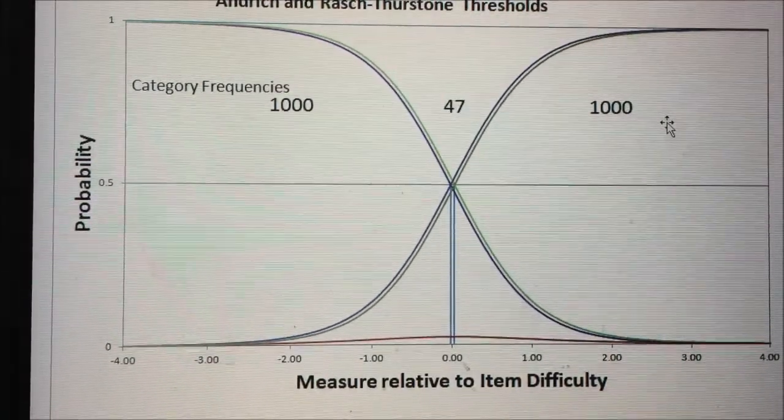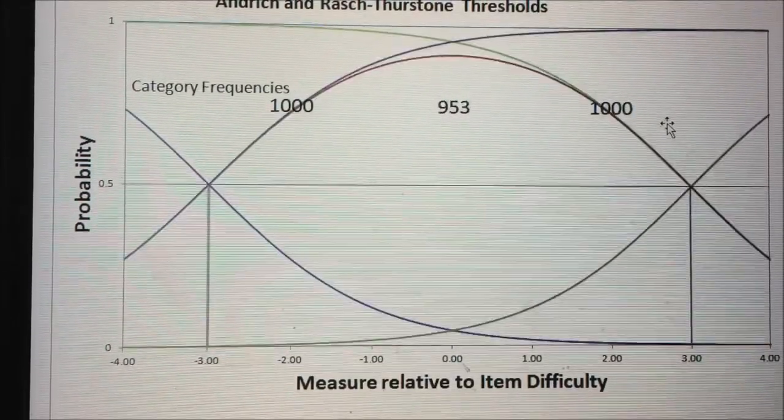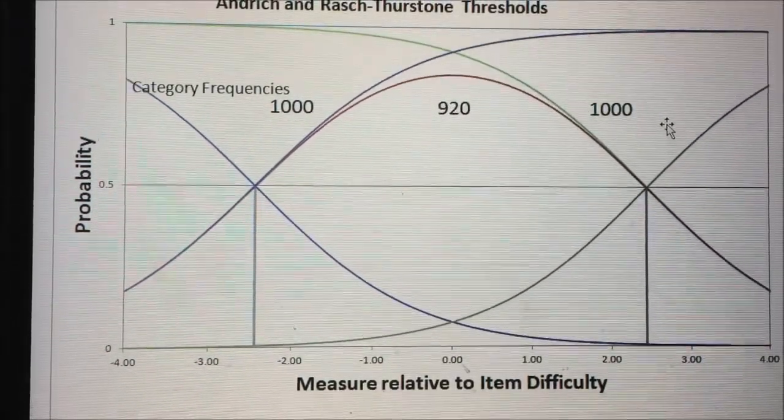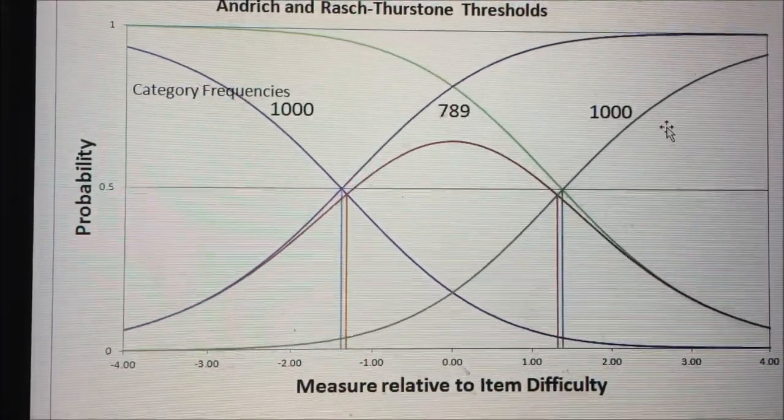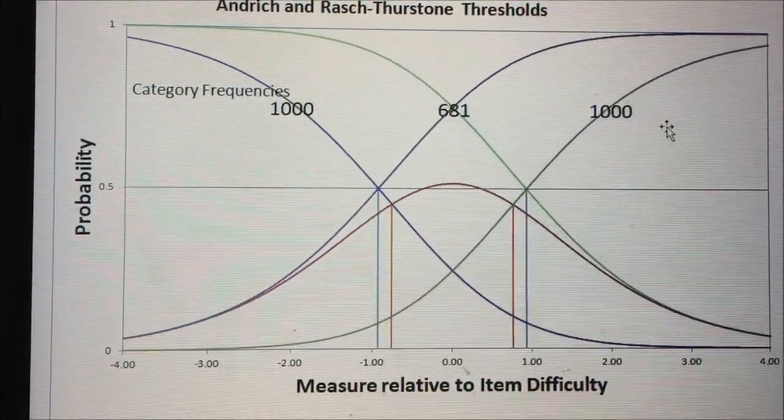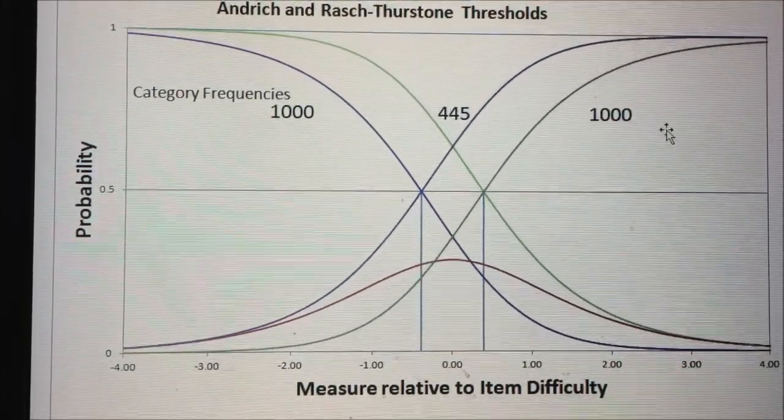When the central category frequency is very large we will see in just a moment the Andridge thresholds appear, and they are the orange lines that are just appearing now. We can see that they mark the points of equal probability for adjacent categories.